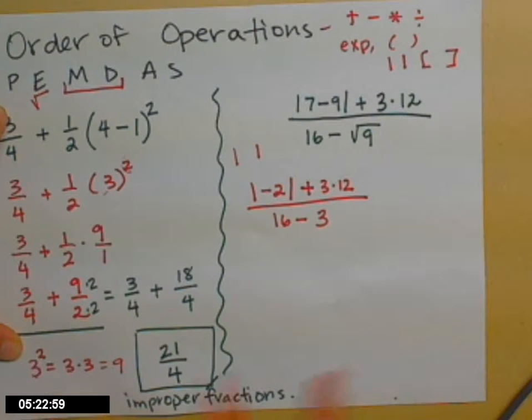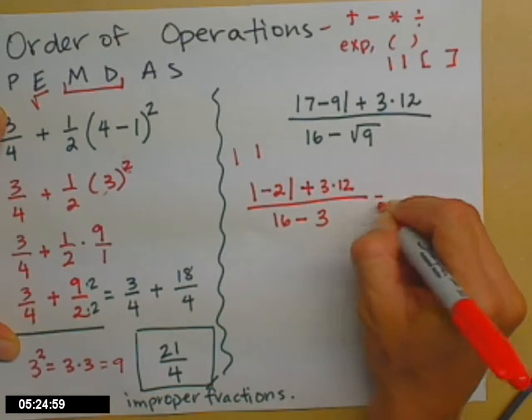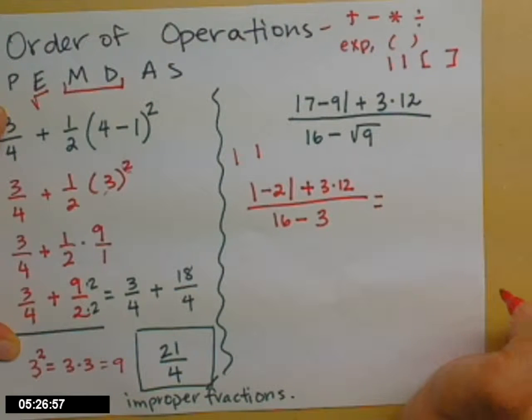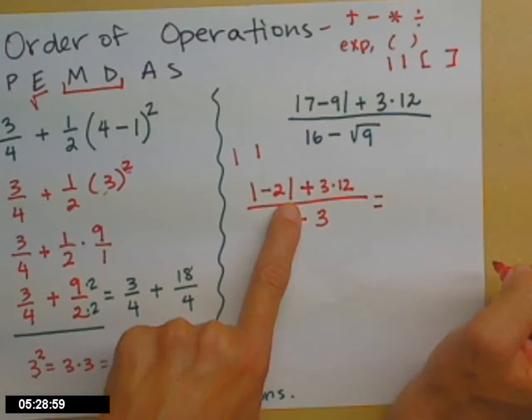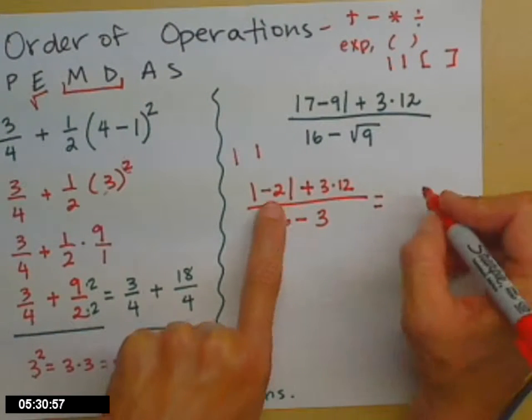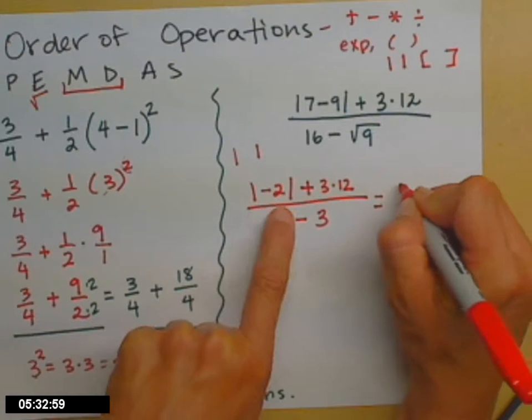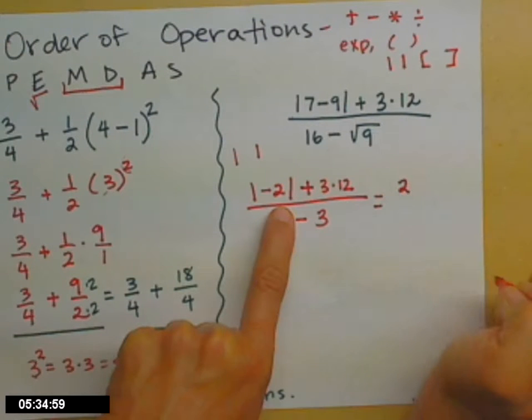Back over here, it's the same idea that we did just on that last problem. So now let's see what I can have. Now I have the absolute value of -2. Well, that's not just -2. That absolute value changes that -2 to a positive 2.